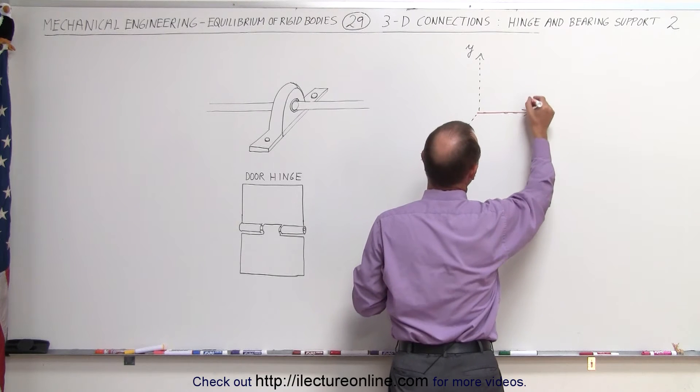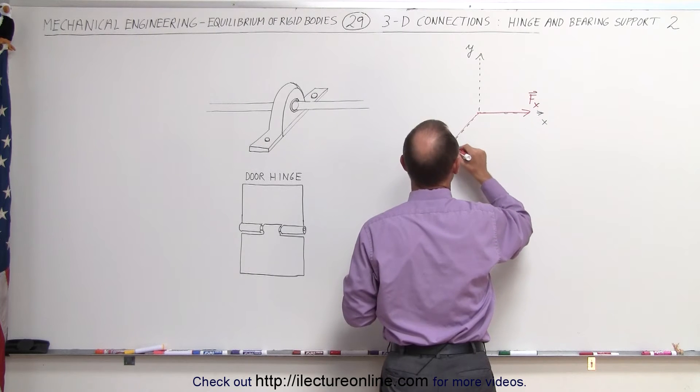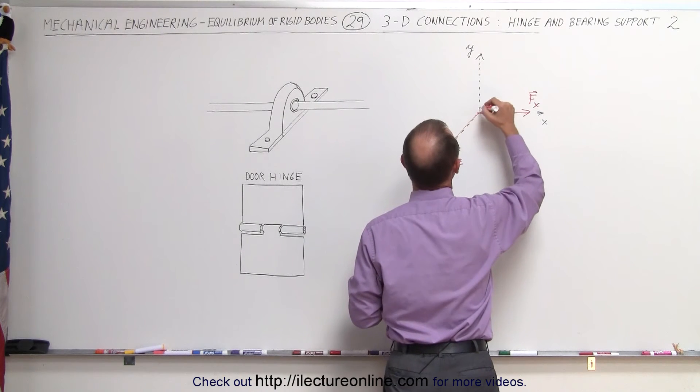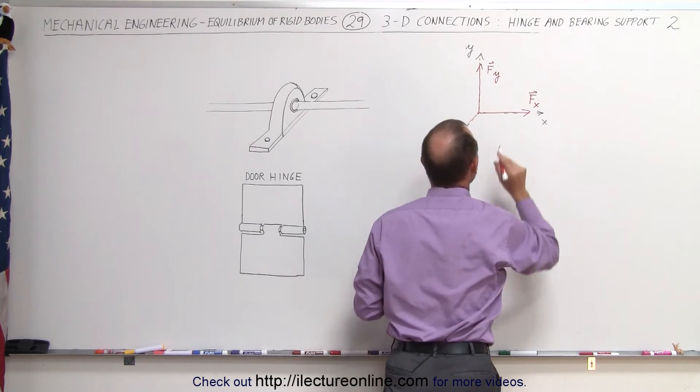So we have a force in the X direction because it cannot move in the X direction, we have a force in the Z direction because it's being constrained in the Z direction and we have a force in the Y direction because it's also constrained in the Y direction.